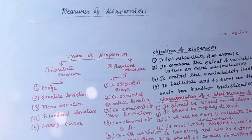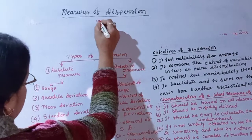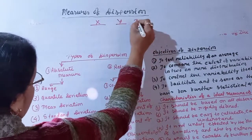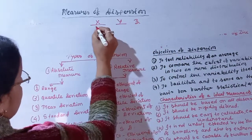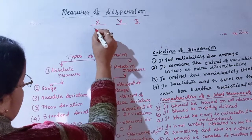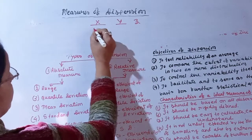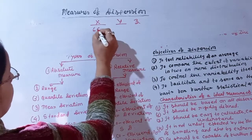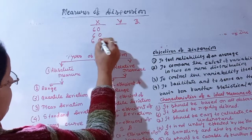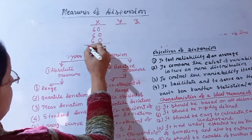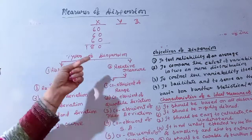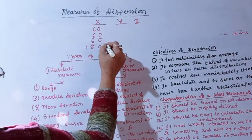Consider three series: X, Y, and Z. The X series has values 60, 60, 60, with a total of 180, and a mean of 60.